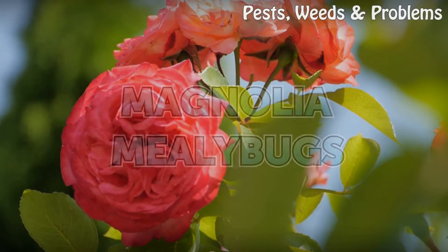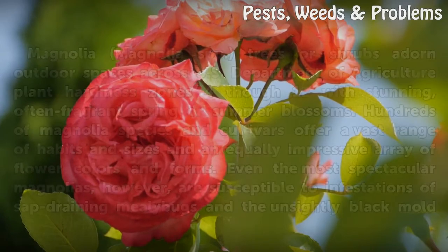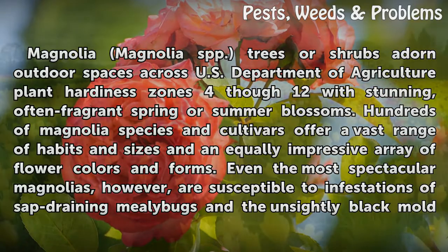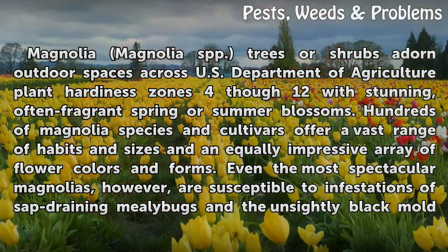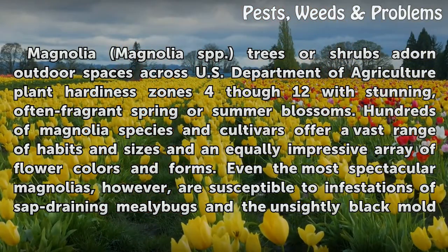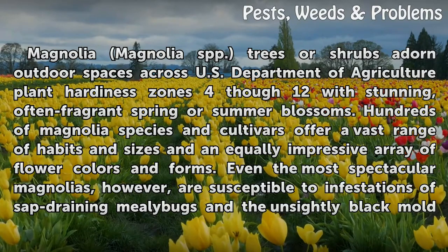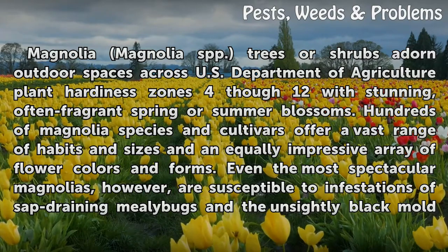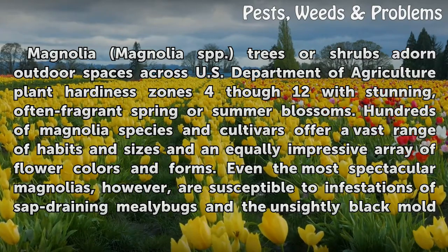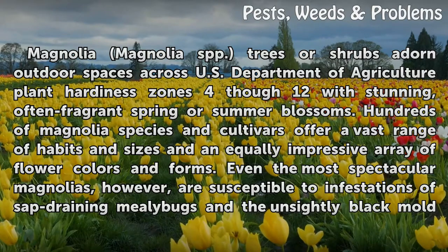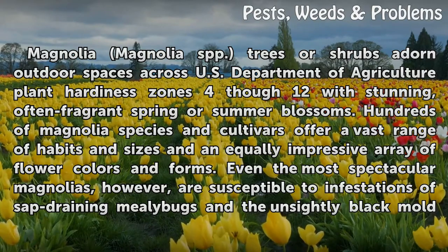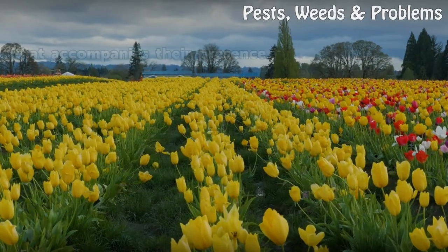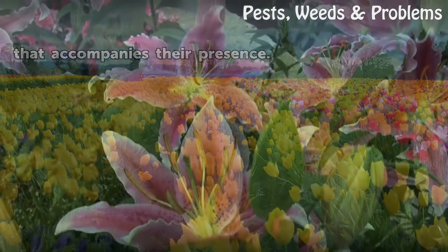Magnolia mealy bugs. Magnolia (Magnolia spp.) trees or shrubs adorn outdoor spaces across U.S. Department of Agriculture plant hardiness zones 4 through 12 with stunning, often fragrant spring or summer blossoms. Hundreds of magnolia species and cultivars offer a vast range of habits and sizes and an equally impressive array of flower colors and forms. Even the most spectacular magnolias, however, are susceptible to infestations of sap-draining mealy bugs and the unsightly black mold that accompanies their presence.